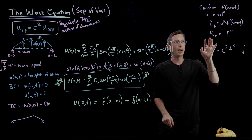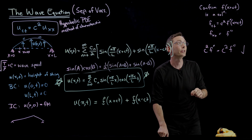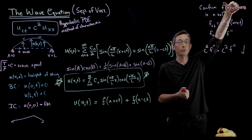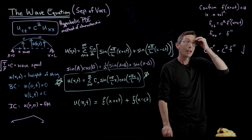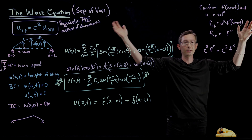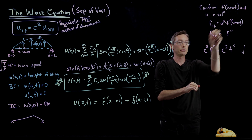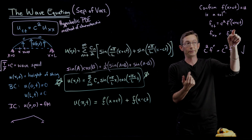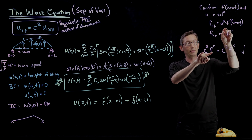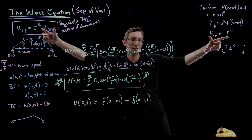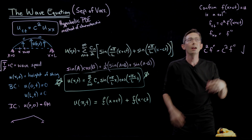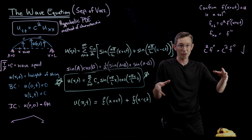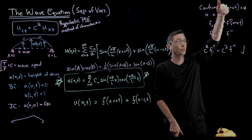So essentially, if u equals f, we confirm that u equals f is a solution. The way I'm doing that is by taking both partial derivatives with respect to time and with respect to x, and plugging them into the left and right-hand side of the equation. So u_tt is f_tt, which is c²·f''. That had better equal c² times u_xx, but u_xx is just f''. So c²·f'' = c²·u_xx = c²·f''. I've confirmed that this is a solution for any function f that satisfies your boundary conditions.